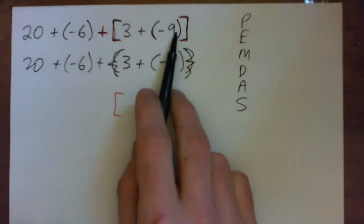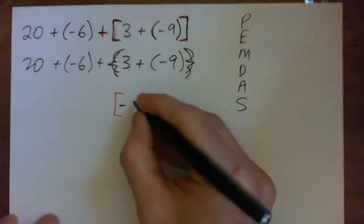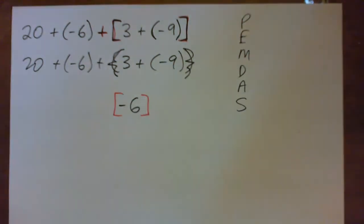So 3 plus negative 9 makes what? Positive 3 and a negative 9. That's 3 good guys and 9 bad guys. 3 dollars cash combined with a 9 dollar debt will give you a debt of 6 dollars. So 6 bad guys.